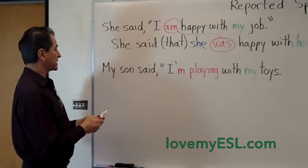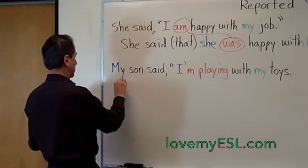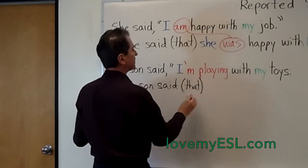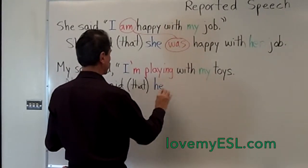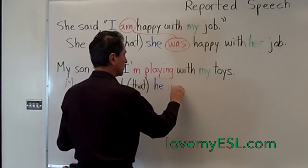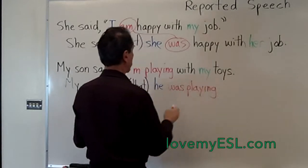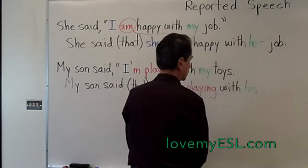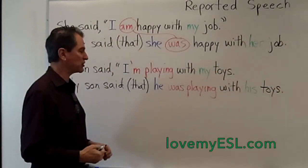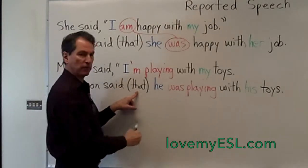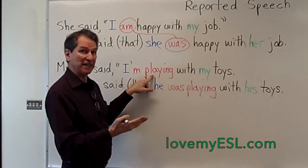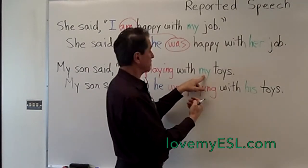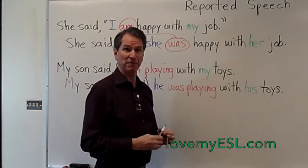Let's look at a second example. My son said, 'I'm playing with my toys.' Well, my son said — 'that' in parentheses because it's not necessary — my son said that he was playing with his toys. 'Am playing,' which is the present continuous, changes to the past continuous: 'was playing.' And the other change is any possessive pronouns like 'my' change to be appropriate, which is 'his.' So: he was playing with his toys. Notice the same changes are made — 'I' changes to 'he,' and present continuous changes to past continuous.